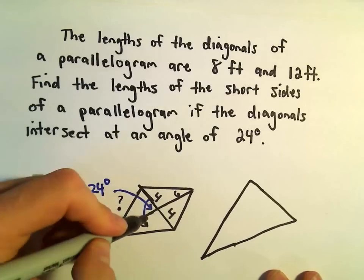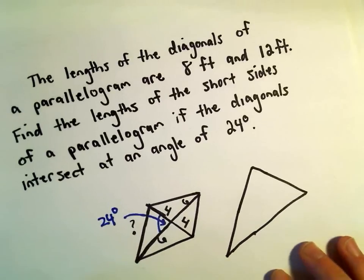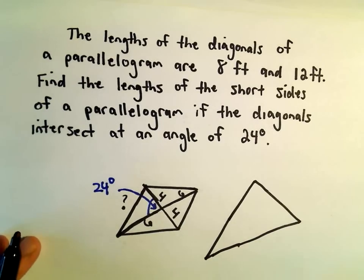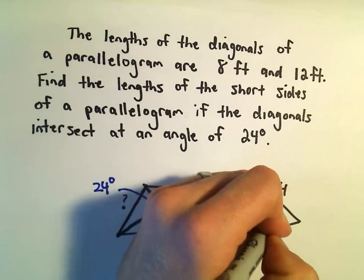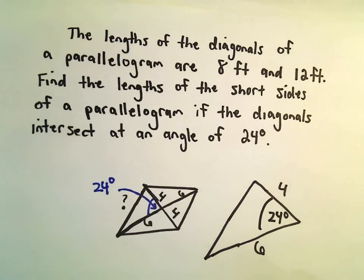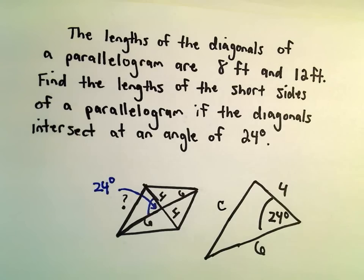I'm just kind of looking at that one little left corner, bottom left corner, or I guess it's the top left corner, of my parallelogram. One side is 6, one side has length 4. I know that this is 24 degrees, and we're just trying to find the length of the shorter side, so I'm going to call it C.